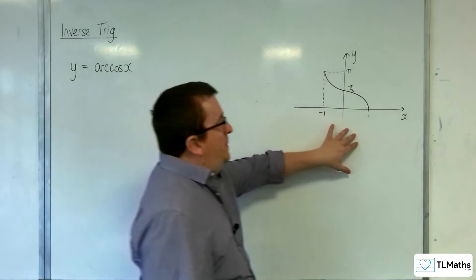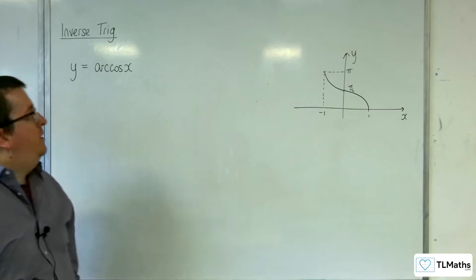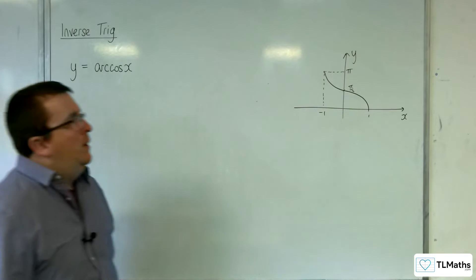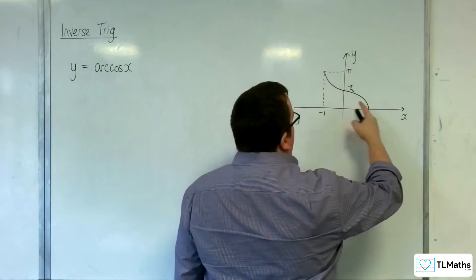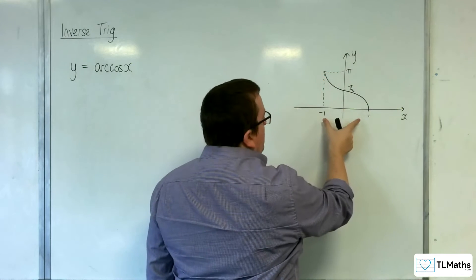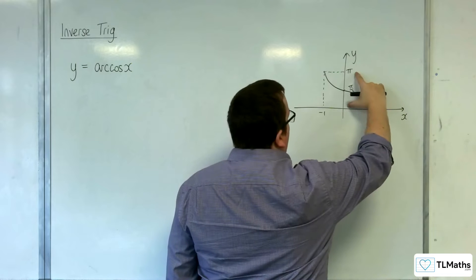You should have been introduced to the graph, the function of arc cosine x. And this is what it looks like. It's got a domain between minus 1 and 1 and a range between 0 and pi.